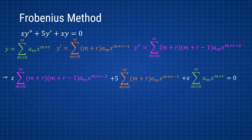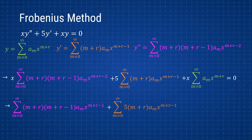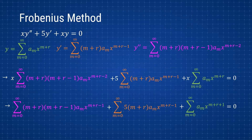Now I want to bring the terms outside the summations inside. For the first x, since its power is one, bringing it inside changes the exponent from m plus r minus two to m plus r minus one. The coefficient five just goes inside next to the multiplication without changing the power. For the final x, bringing it inside changes the exponent from m plus r to m plus r plus one. This takes care of all terms that were outside the summations.